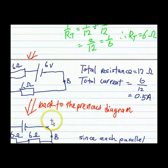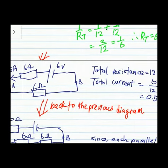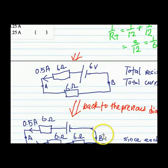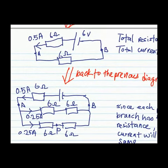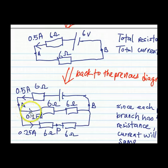Let's go back to the previous circuit diagram. The diagram shows that the total current is 0.5 ampere flowing out from the source. After point A, the current splits into two equal currents of 0.25 ampere each.